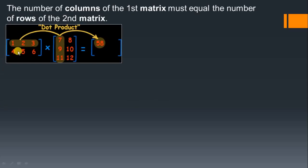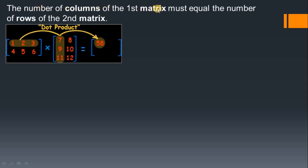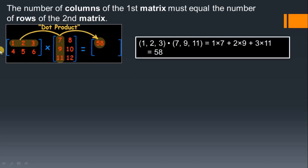We are taking the example of two matrices — this is the first matrix and this is the second matrix. Observe the number of columns of the first matrix: there are three columns. And it equals the number of rows of the second matrix — you can see there are three rows here. So our concept that the number of columns of the first matrix equals the number of rows of the second matrix is satisfied.